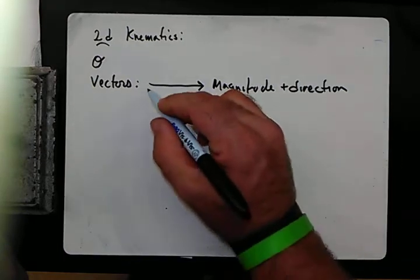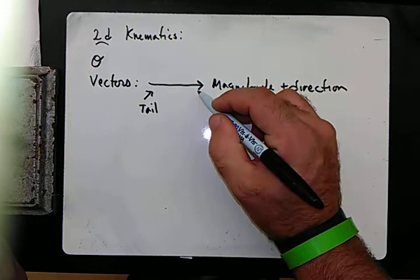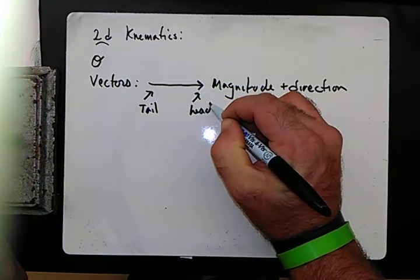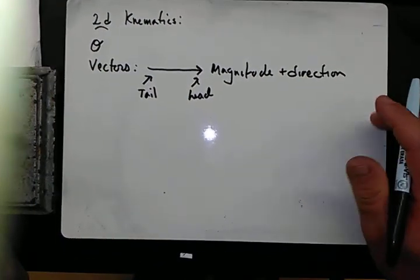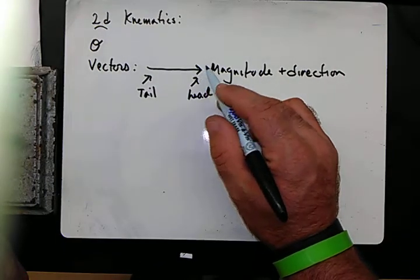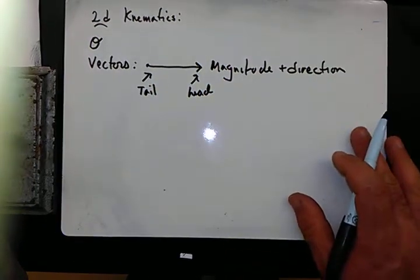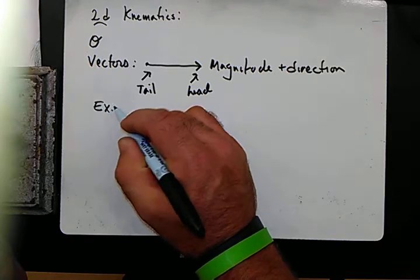and direction. And the two parts of a vector, tail and head. Some people call the head the tip, but this is the head of the vector, this is the tail of the vector. And I'm going to give you guys some concrete examples of what a vector could be.